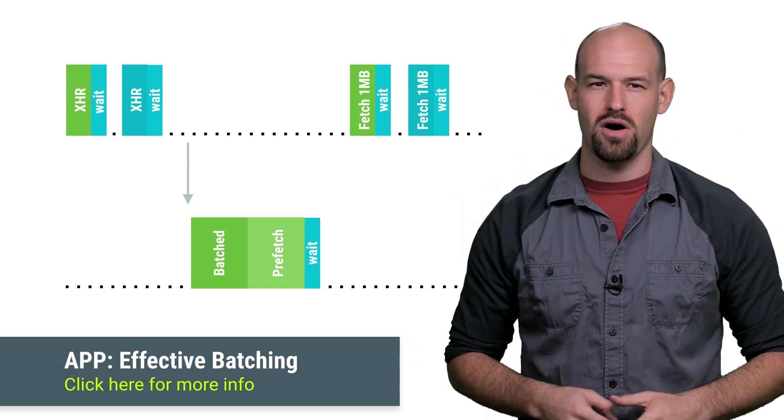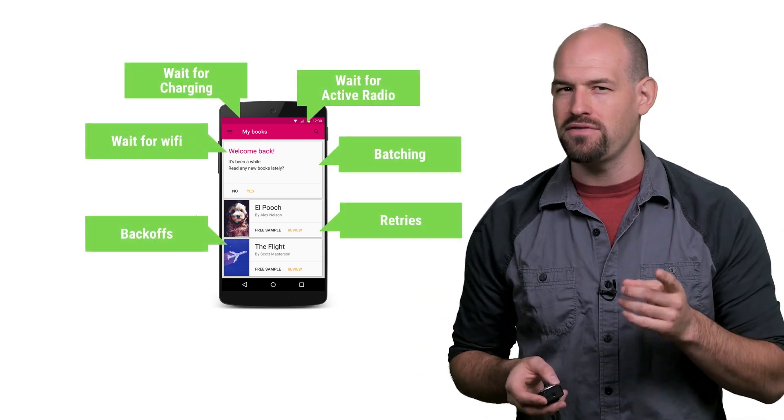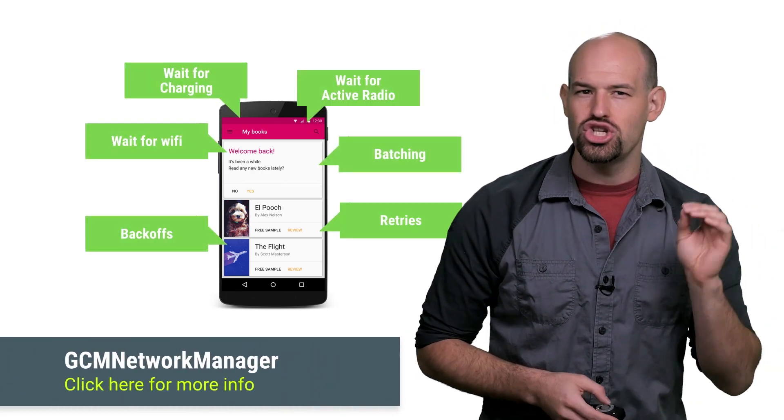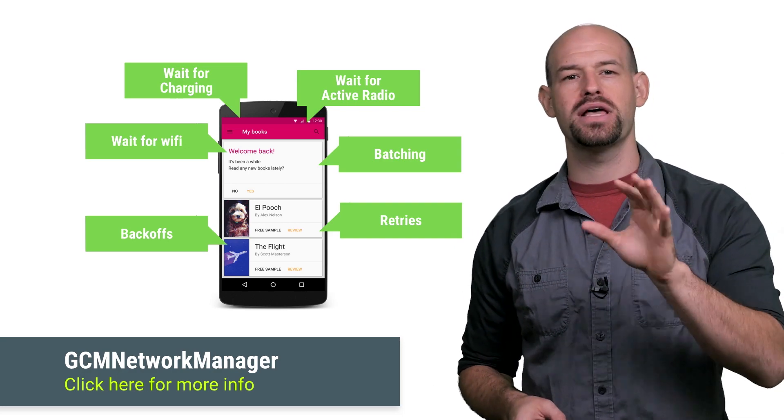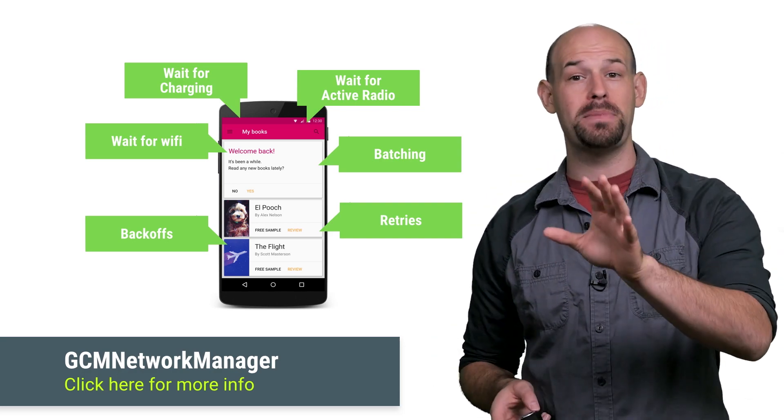That's when things start to get really awesome. And the good news is that you can update your app to adopt these patterns without having to write a massive amount of code. GCM Network Manager is a Google Play Services API which helps to schedule network-oriented tasks and handle batching for you.